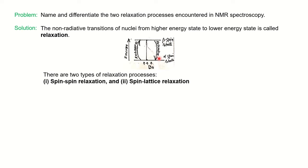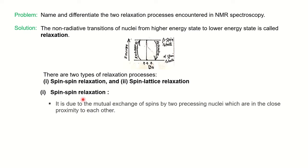There are two types of relaxation: spin-spin relaxation and spin-lattice relaxation. First, spin-spin relaxation is due to the mutual exchange of spins by two precessing nuclei which are in close proximity to each other. The spins are mutually exchanged between precessing nuclei.